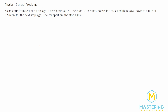Welcome to Mastering Solutions. This problem says that a car starts from rest at a stop sign and then it accelerates at two meters per second squared for six seconds, coasts for two seconds, and then slows down at a rate of 1.5 meters per second squared for the next stop sign. The question asks how far apart are the stop signs.